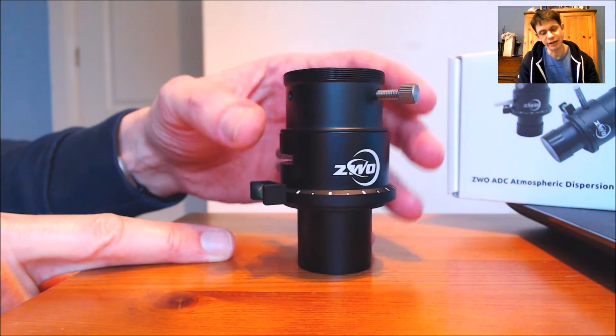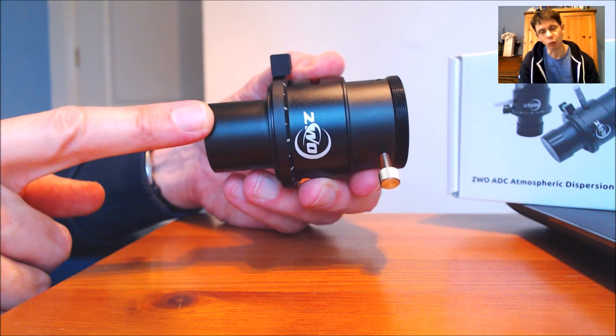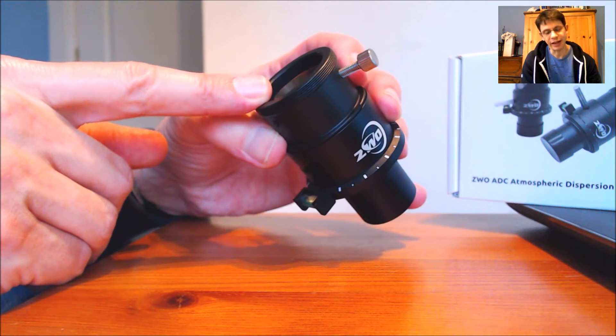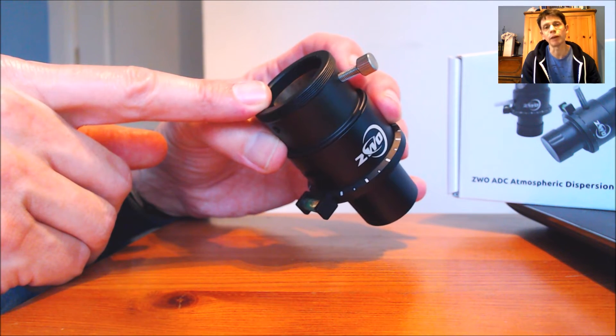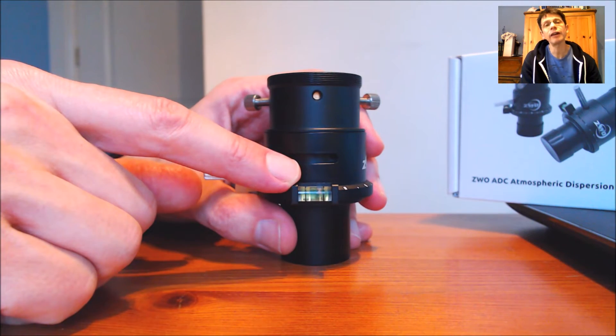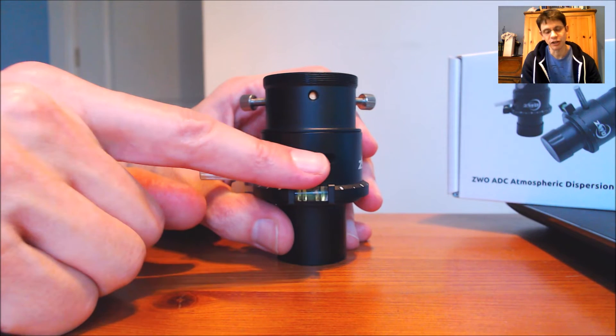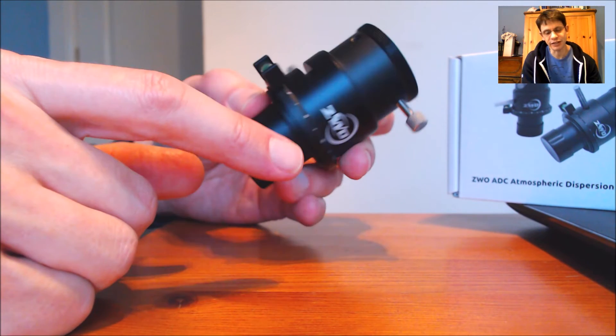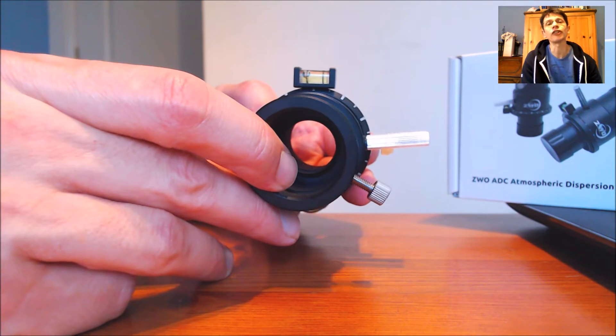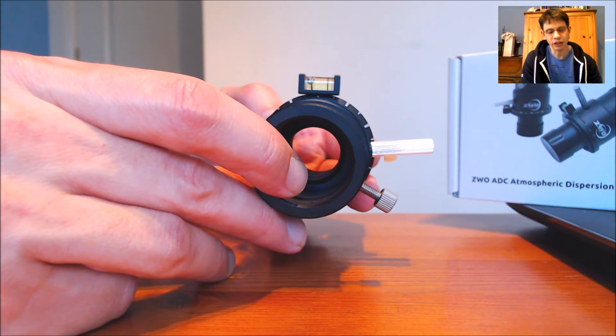The first thing to notice is that it's a device that will fit into a 1.25 inch draw tube on one side and then on the other side you'll be able to connect a camera or a diagonal eyepiece. You can see that it's got a spirit level here which is basically because you need to have this device fitted such that it's horizontal against the horizon when you're adjusting it.